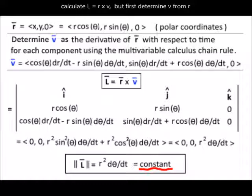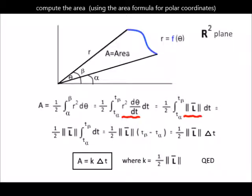So why do we care? We now compute the area swept out by the line from the sun to the planet using the area formula for polar coordinates. From elementary calculus, area is equal to half the integral of r squared dθ, evaluated from angle alpha to angle beta. We transform from the angle domain theta to the time domain t by writing dθ as dθ/dt times the differential dt and adjust the limits of integration to the time domain.